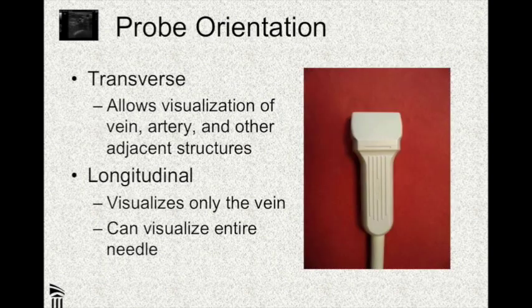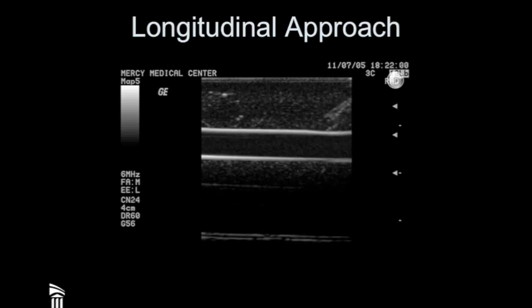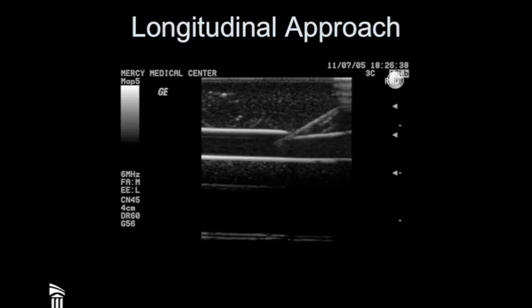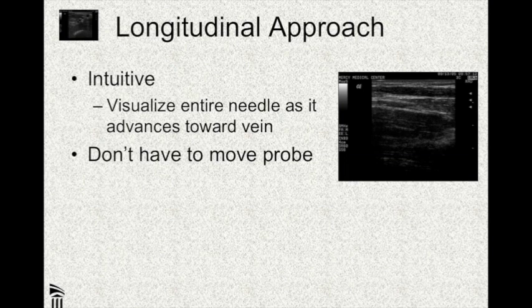There are two different ways you can orient the probe in relation to the vein — either transverse to it or longitudinal — and they both have their advantages and disadvantages. This is a movie clip of a longitudinal approach, and what we're looking at is a gel phantom, so it's a very nice, clean picture, easy to interpret, of a vein and a needle that we see in longitudinal going right down into the vein. This looks very intuitive and seems very easy to do. One advantage is that you don't have to move the probe.